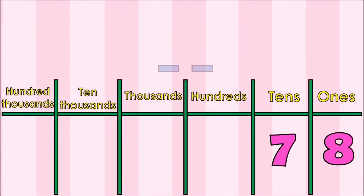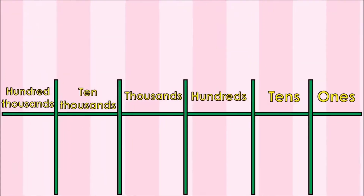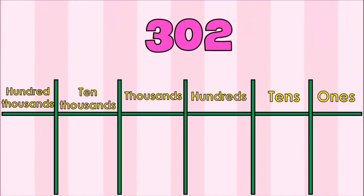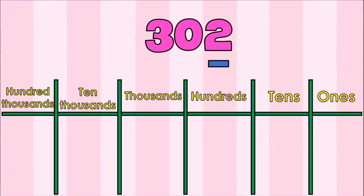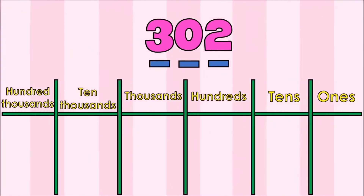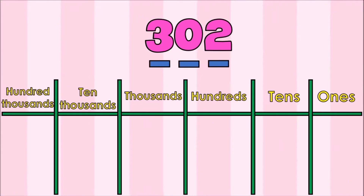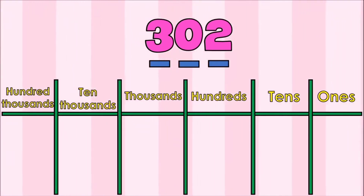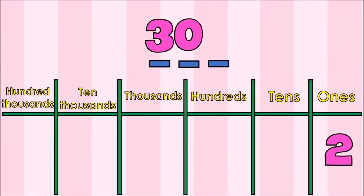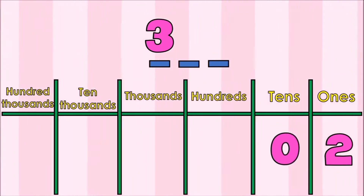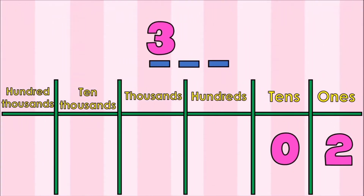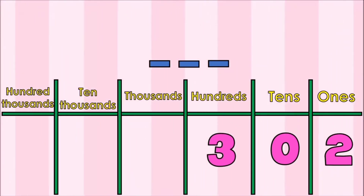Another example: I have 302, and 302 has 3 digits — 2, 0, and 3. Now, let's put each digit into the place value chart. The place value of 2 is ones. How about 0? It's in tens place. How about 3? 3 should be placed in hundreds place. That gives us 302.